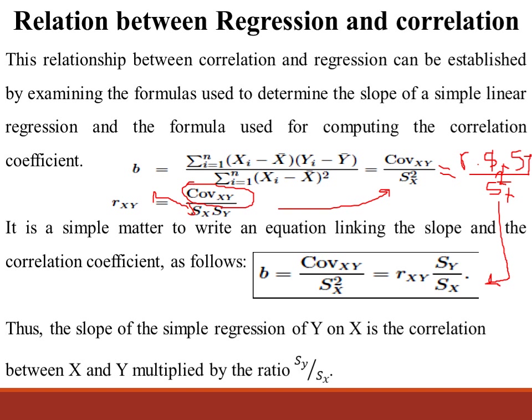The formula used for computing the correlation coefficient is as follows, and we reviewed it in the last lecture. B equals the summation of (xi minus x-bar) times (yi minus y-bar), divided by the summation of (xi minus x-bar) squared, which is equal to the covariance of x and y over the variance of x.